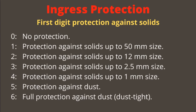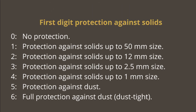The first digit of IP — protection against solids: 0 is no protection; 1 is protection against solids up to 50 mm; 2 is up to 12 mm; 3 is up to 2.5 mm; 4 is up to 1 mm; 5 is protection against dust.